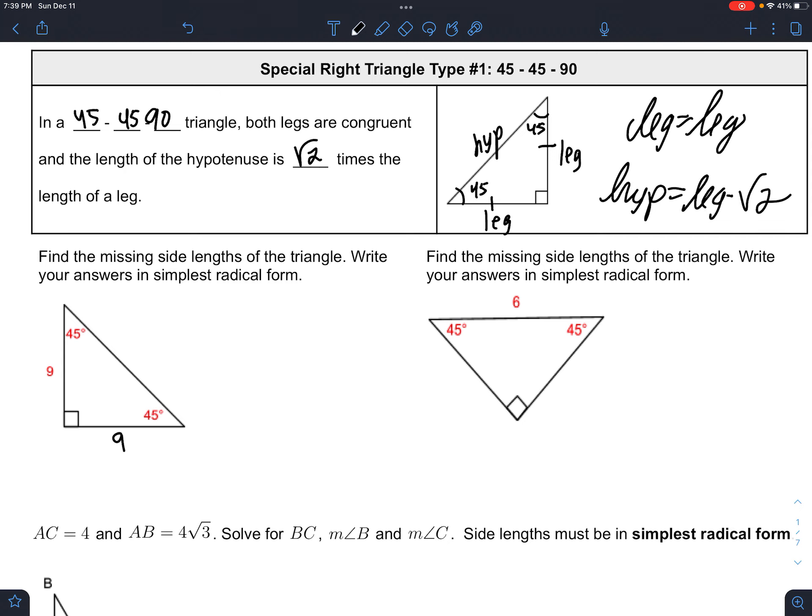So with something like this, the leg is 9, and then this is 9 square root 2, just because the hypotenuse is the leg, 9 times square root 2. Not much work to do.